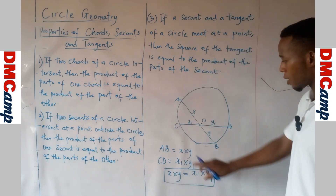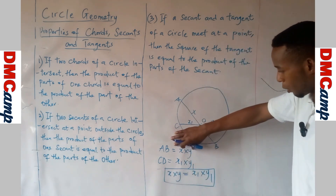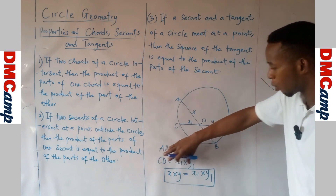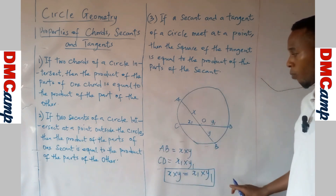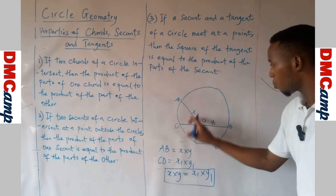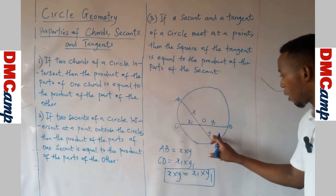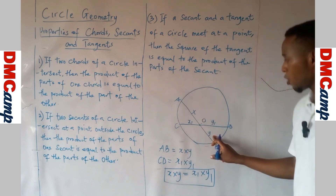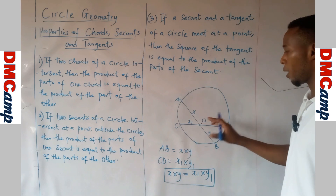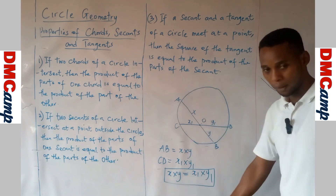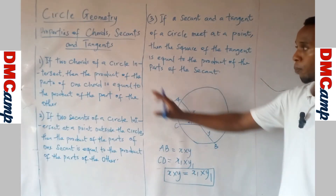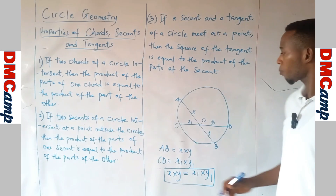The product of the parts of one chord is equal to the product of the parts of the other — that is, X multiplied by Y is equal to X1 multiplied by Y1. That is all about this property.